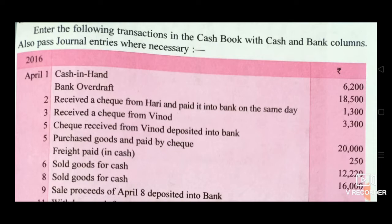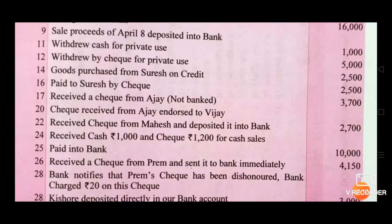6th April: sold goods for cash Rs. 12,000. 8th April: sold goods for cash Rs. 16,000. Sale proceeds of April 8th deposited into bank. 11th: withdrew cash for private use Rs. 1,000. 12th: withdrew by check for private use Rs. 5,000.